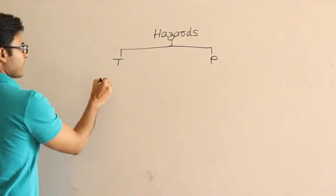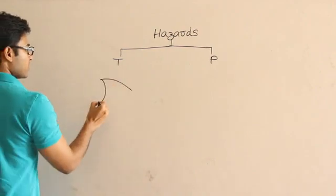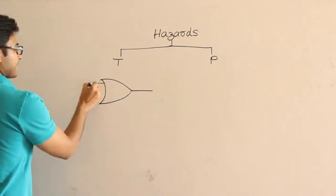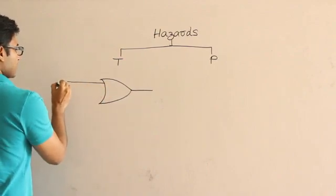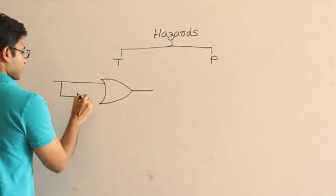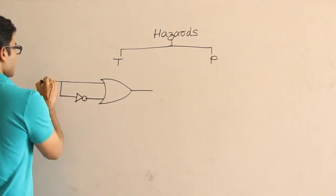So temporary hazards are like this. I will just take an example and explain. Assume that there is an OR gate and now the input given, this is A.